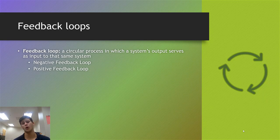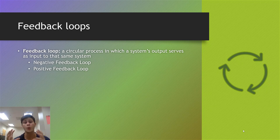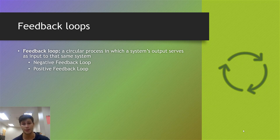The next thing we need to talk about when we refer to systems is feedback loops. Feedback loops are circular processes in which a system's output serves as an input for that same system or another system. There are two major types: a positive feedback loop and a negative feedback loop. Many students get tripped up on what constitutes a positive versus a negative feedback loop.